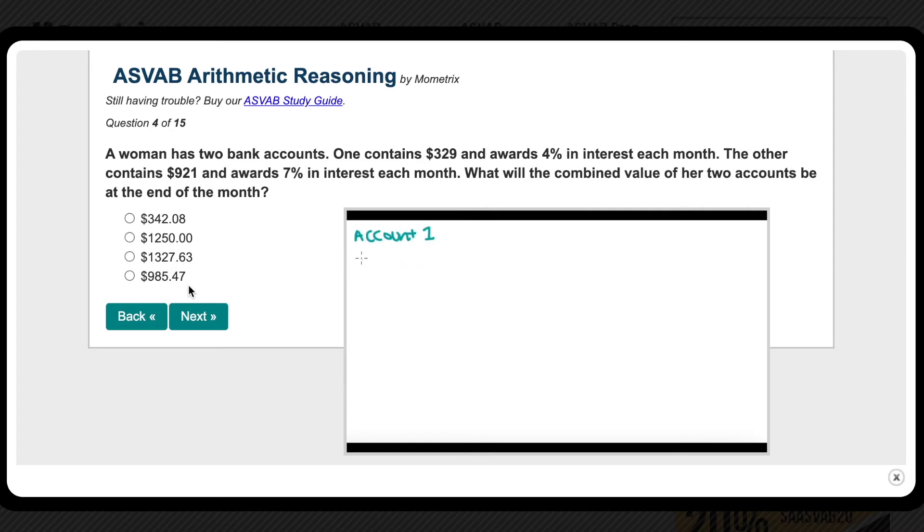We can first work on her first account. It has $329 with a 4% interest rate. Interest just means that every month, the bank will give her 4% of the total amount in her account. So they'll give her 4% of $329. And in order to calculate this, you need to convert this percentage into a decimal. So you just move the decimal to the left two times. So you have 0.04. Then multiply 0.04 by 329. That's $13.16. That means the bank will give her $13.16 in interest that first month. So the total amount in her first bank account will be the original $329 plus the $13.16 in interest. The total amount added together is $342.16.